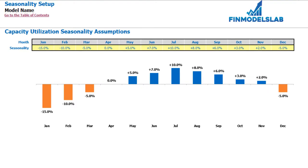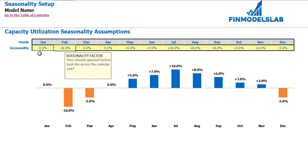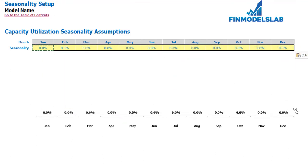On the seasonality tab you can set up your capacity utilization seasonality assumptions across the months. The dashboard previously set up the average capacity utilization by years, and here you may adjust it for different months across the year. For example, minus 10% means that if you have 50% average capacity utilization across the year, you will multiply 50% by 0.9 and get 45% for February. Conversely, plus 10% in July means you multiply 50% by 1.1 for 55% utilization. If you don't need any seasonality, just put 0 across all months for a flat value.